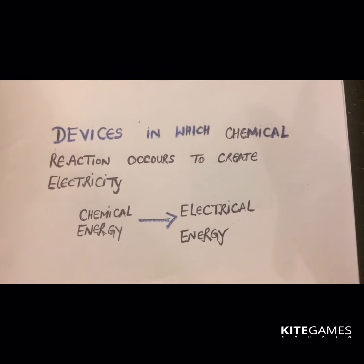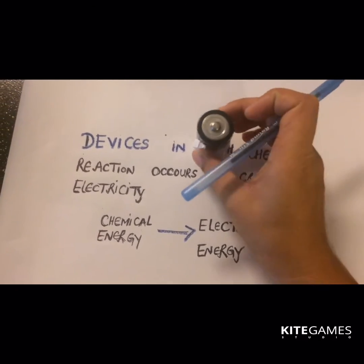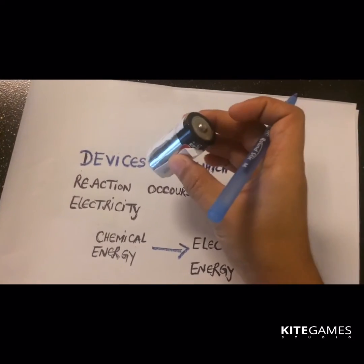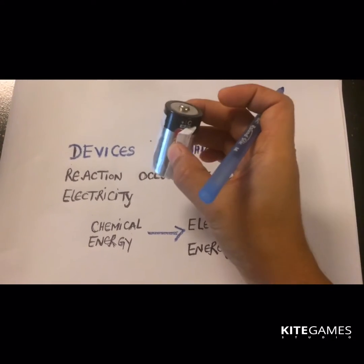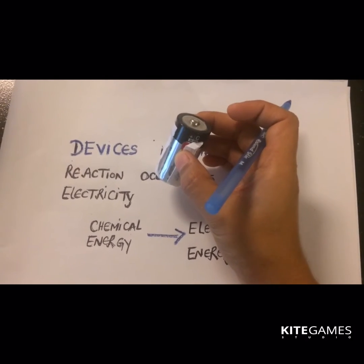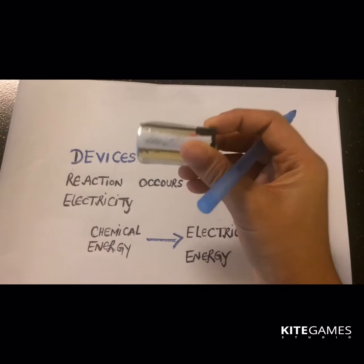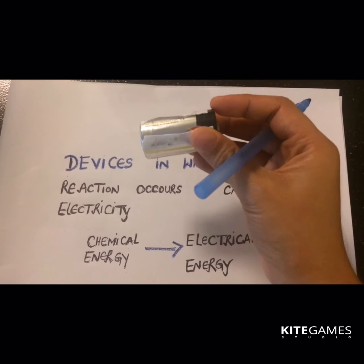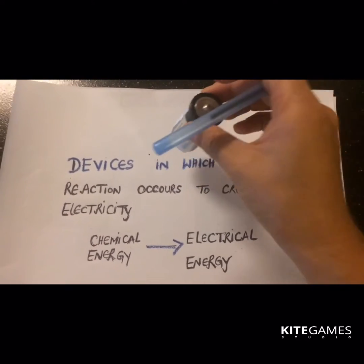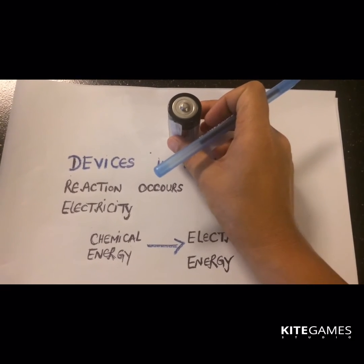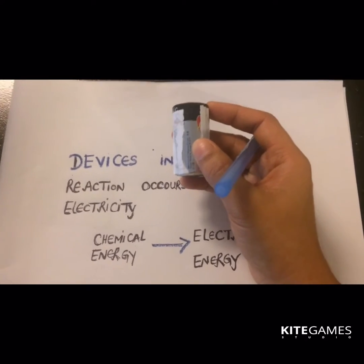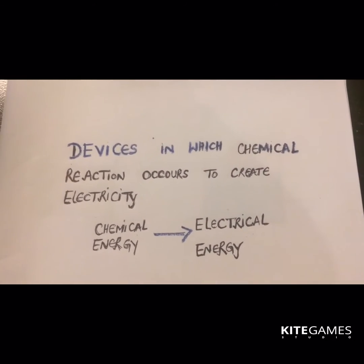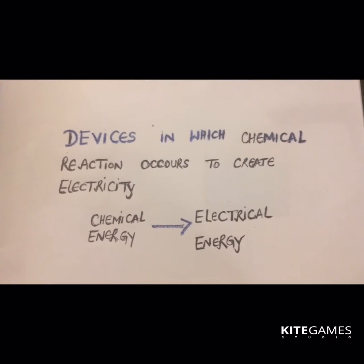Let me give a very simple example. You all must have seen and used this — it is a battery. This battery is a very simple and good example of a galvanic or voltaic cell. In this device, a chemical reaction occurs, creating chemical energy, and that chemical energy is used to create electricity. So this battery is an example of the galvanic cell.